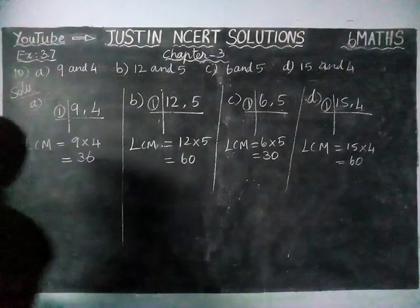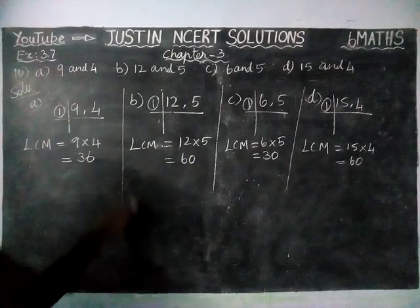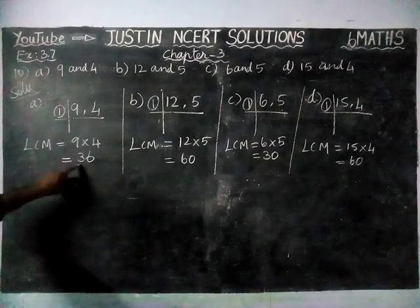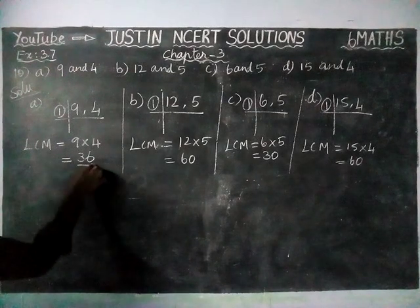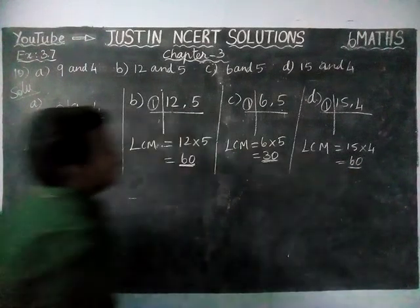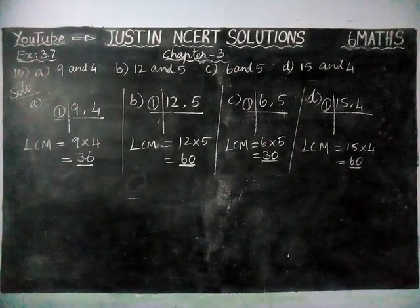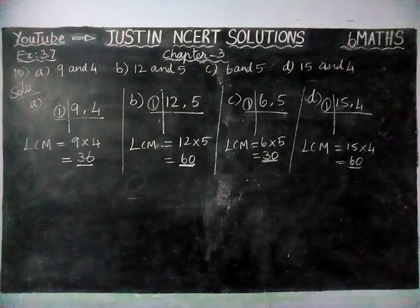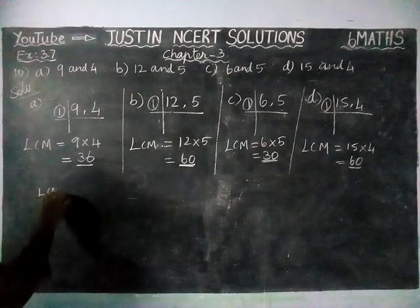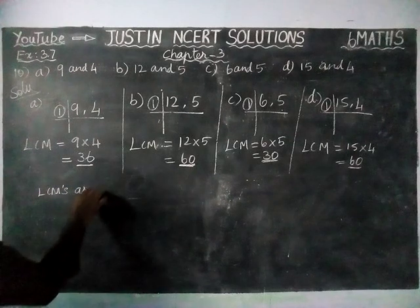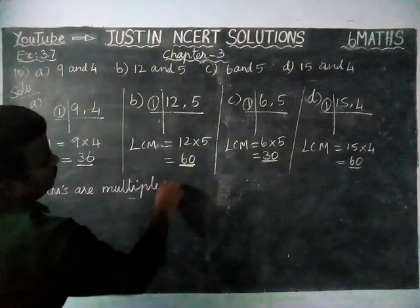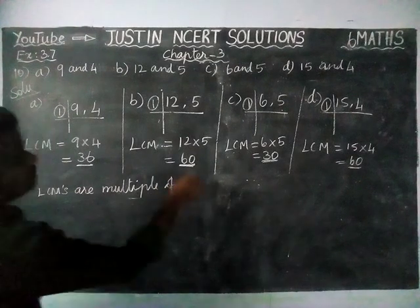In these four parts, we understand that there is a common property. The LCMs obtained are 36, 60, 30, and 60. All of these are multiples of 3. So, the first common property is: LCMs are multiples of 3.